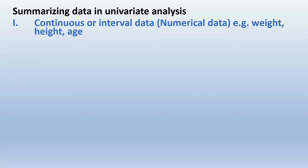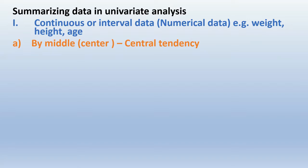If you have a continuous variable — which is numerical data, for example weight, height, or age — you can summarize it by central tendency: how this data is distributed by the center.